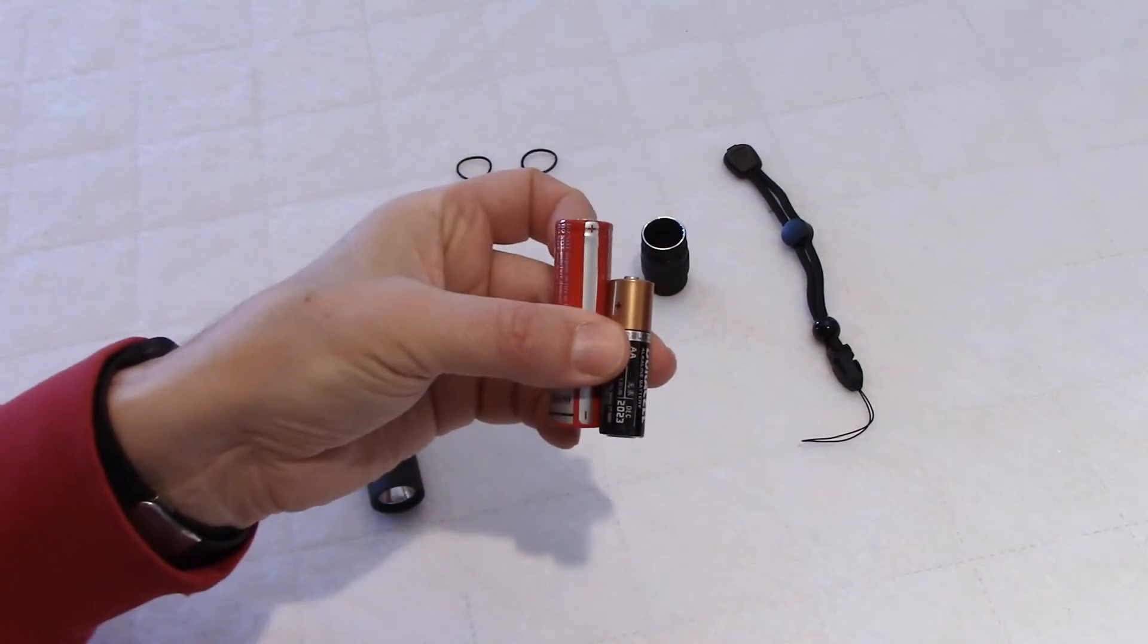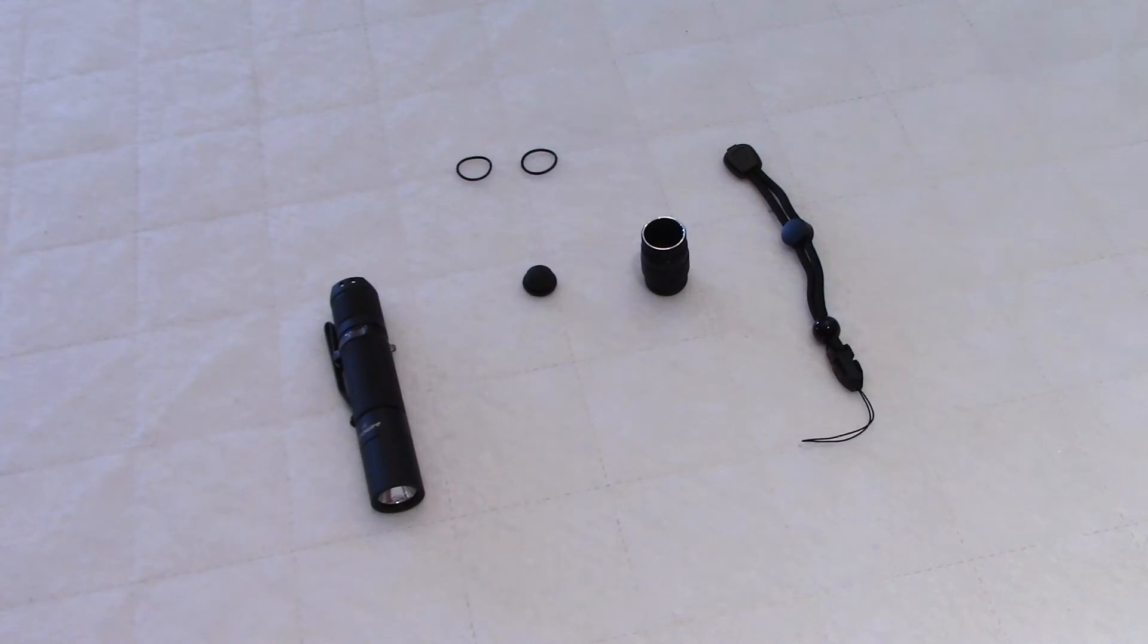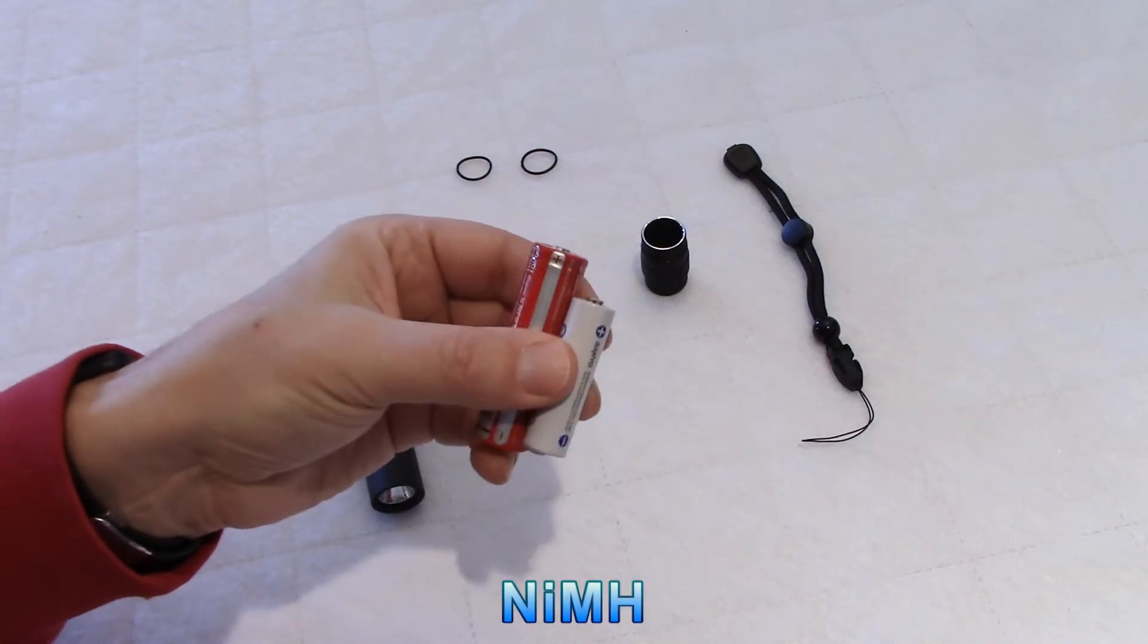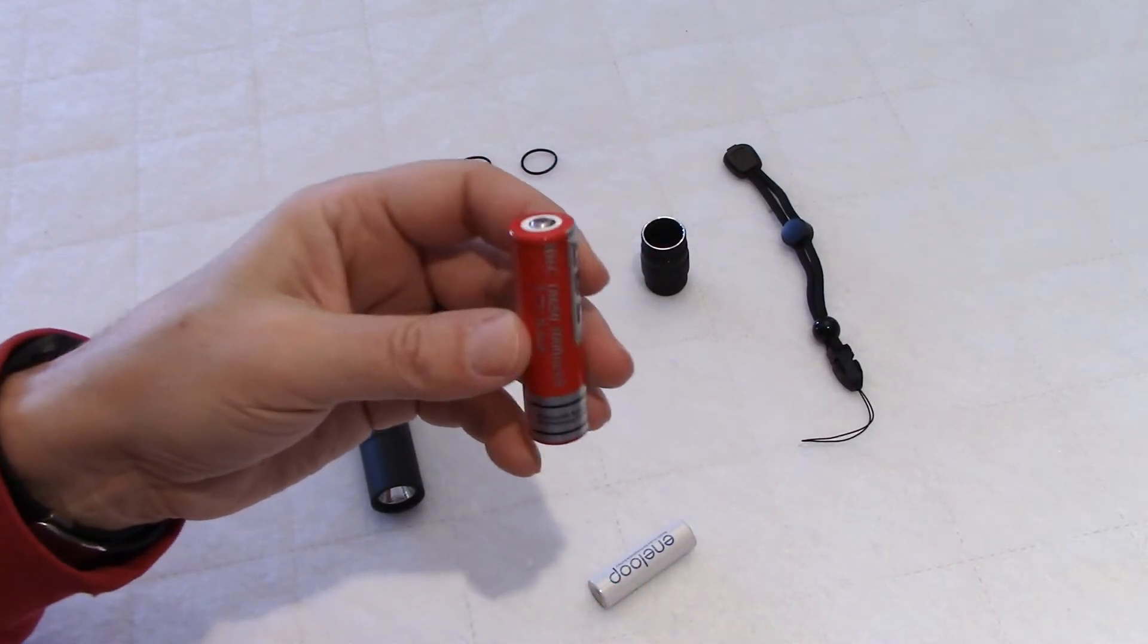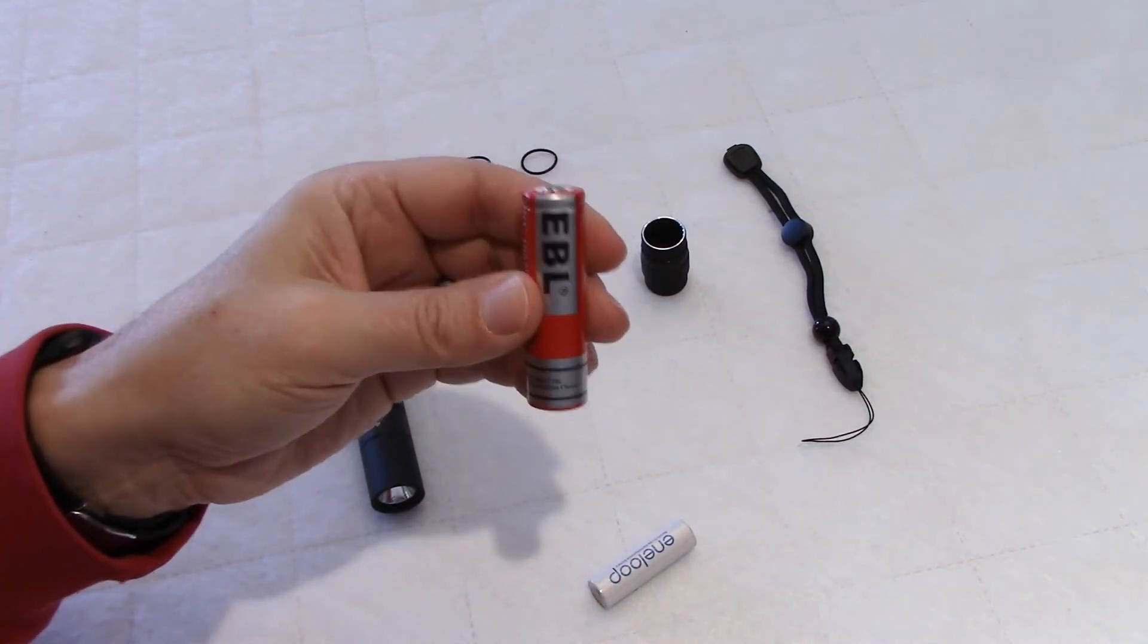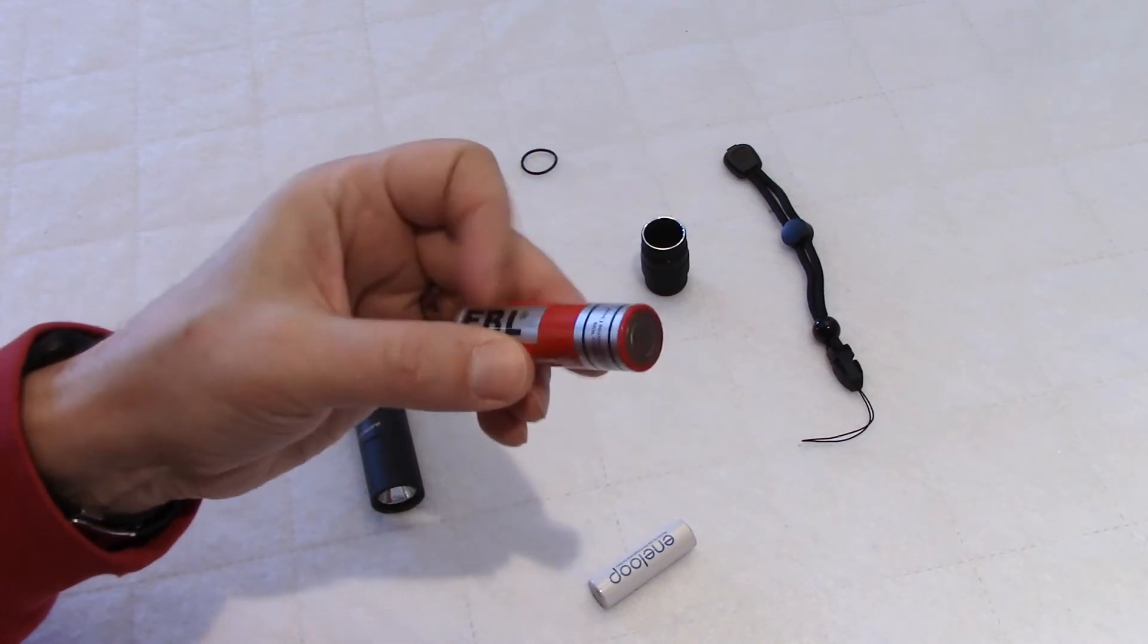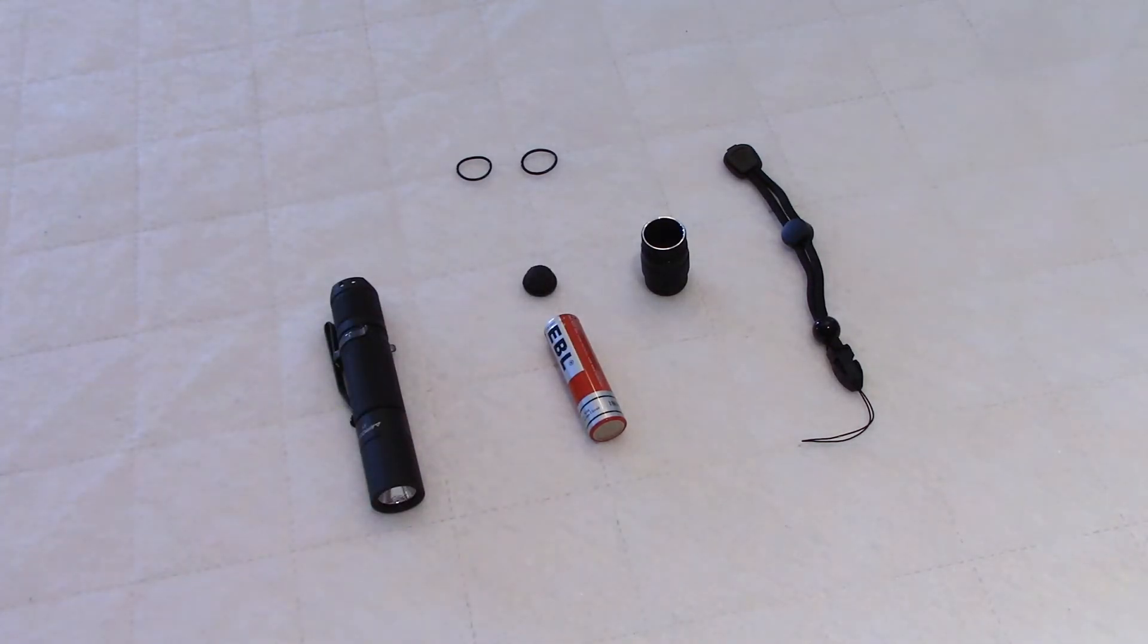So this flashlight does not take AA batteries. It takes the 18650 or the 18350 with the short tube. So to show you the size comparison with a AA, this is the length, this is here the diameter. So a nickel-metal hydride will give you 1.2 volts. This gives you 3.7 and a lot more current. So this is why this flashlight requires this type of batteries. Let's see what kind of light power we can get.